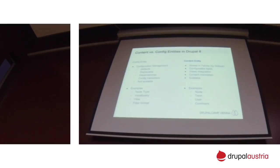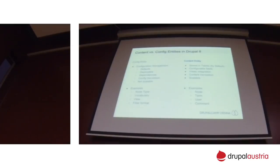Examples for config entity types are node types, vocabulary, views, and filter formats — basically anything that you can configure and set up in Drupal. Content entities are nodes, comments, terms, users, files, and also menu links that you create in the user interface, plus quite a few more.